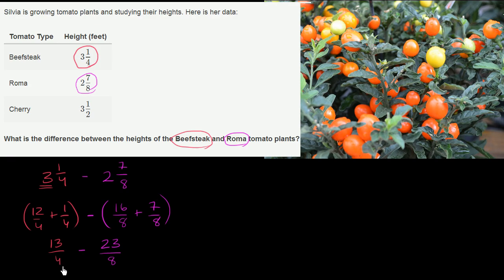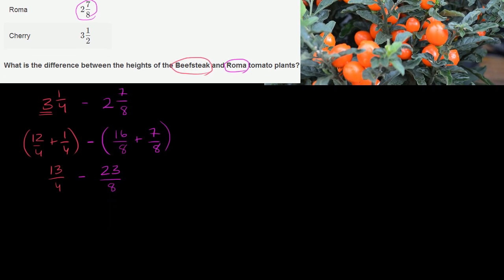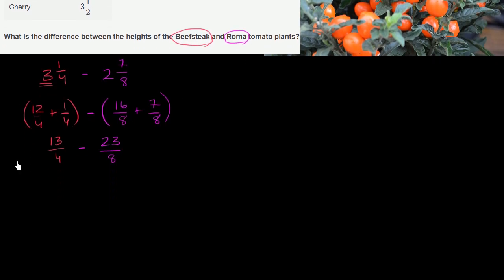What is the smallest number that is divisible by both 4 and 8? Well, 8 is divisible by 8, and 8 is also divisible by 4. So if we can rewrite 13 over 4 as having 8 as a denominator, then we are all set. So let's try to do that. So we're going to write both of these with 8 as a denominator. This one already has it.